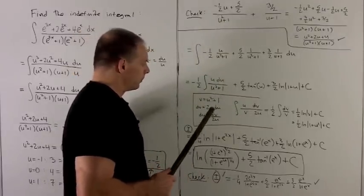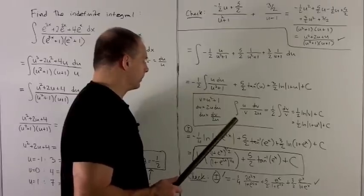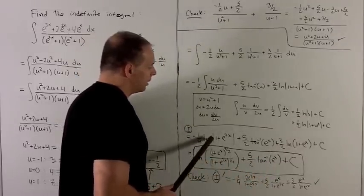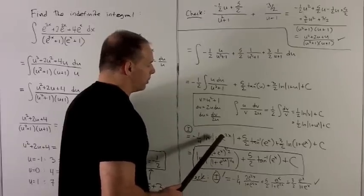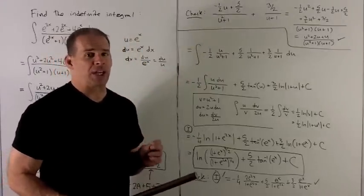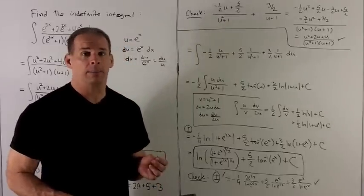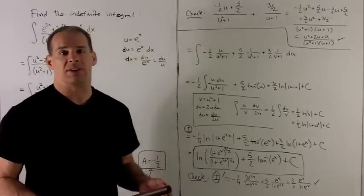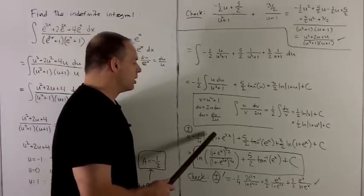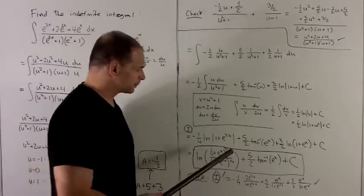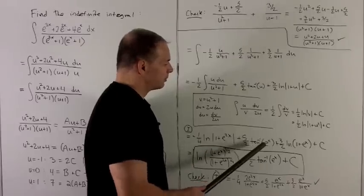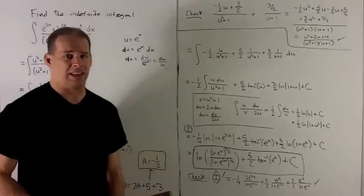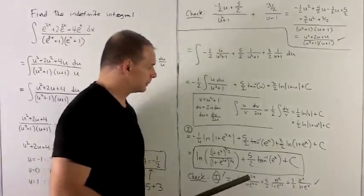Now I substitute e to the x back in for u. From that last piece, we get minus one quarter natural log of 1 plus e to the 2x — since u equals e to the x, u squared is e to the 2x. Note we don't need the absolute value signs anymore: e to the x is always positive, e to the 2x is positive, and adding 1 keeps it positive. So this is always positive and we drop the absolute values. Then we have 5 halves times arctan of e to the x, and 3 halves times natural log of 1 plus e to the x — again no absolute value needed since 1 plus e to the x is never zero or negative.